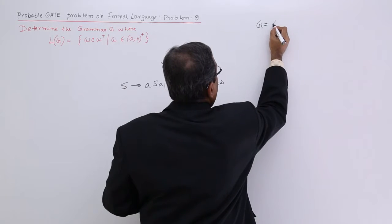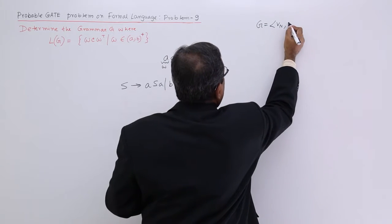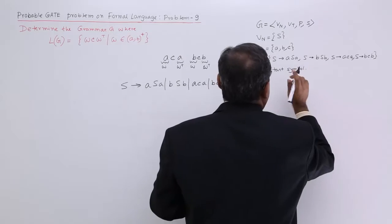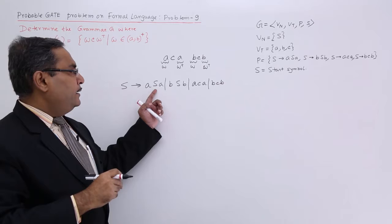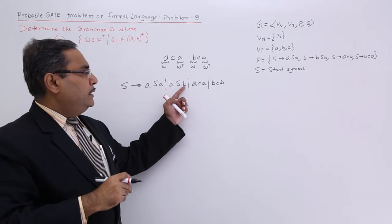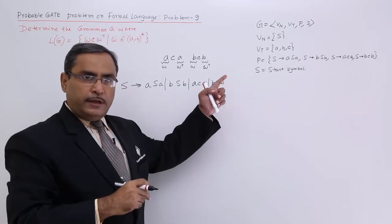G is equal to, so in this way we have defined this particular grammar A, S, A, B, S, B, A, C, A and B, C, B in this way.